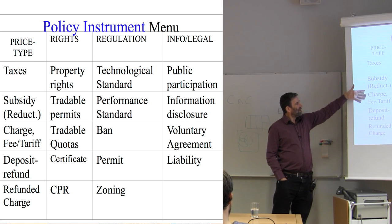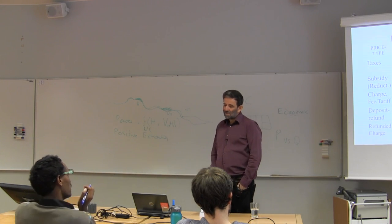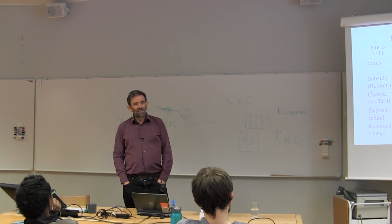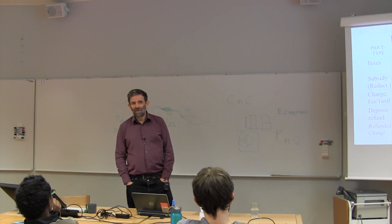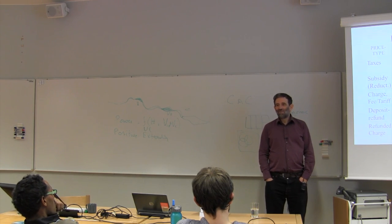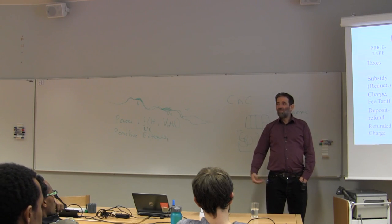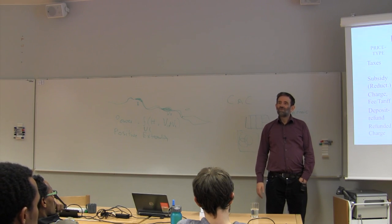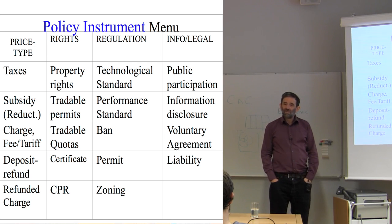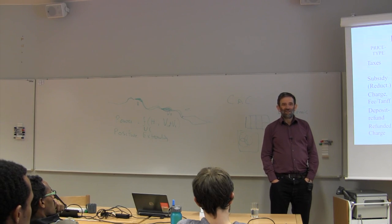A negative fee or tax is essentially a subsidy. Subsidies are very common as instruments — sometimes as perverse instruments. We think subsidies are a nice instrument for good things, but if you go out and look in reality, you usually find subsidies on the wrong things. Lots of bad things are subsidized, like coal. The OECD writes books about subsidy reduction as if it's an instrument, but it's really just getting rid of a perverse instrument. Big programs try to eliminate subsidies for fossil fuels or for overfishing.